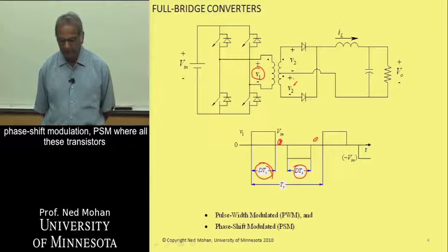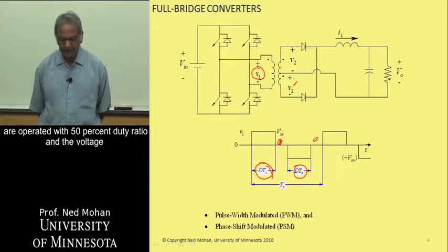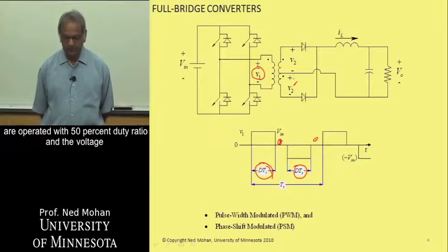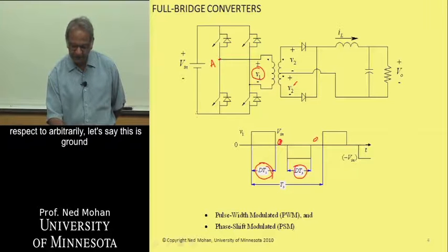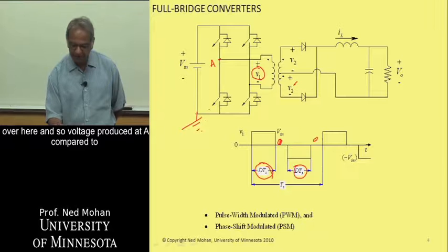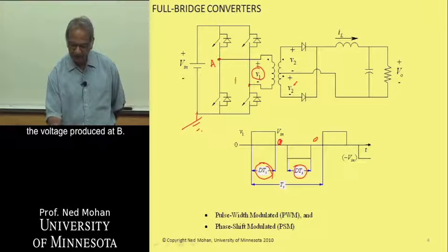Where all these transistors are operated with 50% duty ratio. And the voltage that is produced at, let's say, at this point A, with respect to arbitrarily, let's say, this is round over here. And so voltage produced at A compared to the voltage produced at B. These two are,